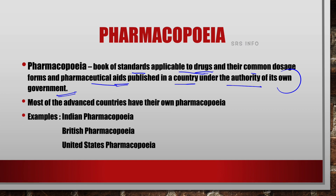All these are published in a country under the authority of government. Nowadays most advanced countries have their own Pharmacopoeia — like Indian Pharmacopoeia, British Pharmacopoeia, United States Pharmacopoeia, etc. While making a drug in India, the directions are followed according to Indian Pharmacopoeia. When making a drug in Britain, we follow the British Pharmacopoeia — whatever the country, they follow the directions, ingredients and preparation forms mentioned in the Pharmacopoeia of that particular country.